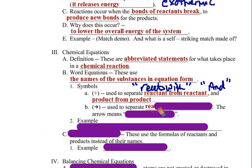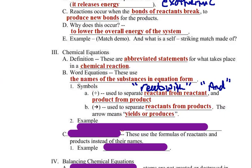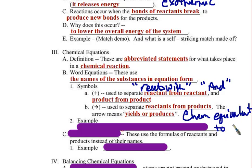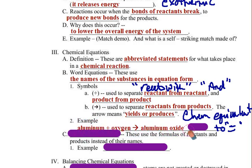Then we have the arrow, and the arrow is used to separate our reactants from our products. The arrow means 'yields' or 'produces,' but really it is the chemistry equivalent to equals — you can't use equals in chemistry, but it is the chemistry equivalent. In our example, aluminum plus oxygen would make aluminum oxide. This is our word equation: aluminum and oxygen yields aluminum oxide.